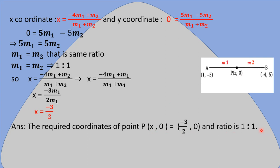Remember: when a point lies on the x-axis, its x-coordinate has a value but the y-coordinate is 0. Conversely, when a point lies on the y-axis, the x-coordinate is 0 and the y-coordinate has a value.